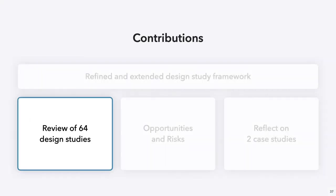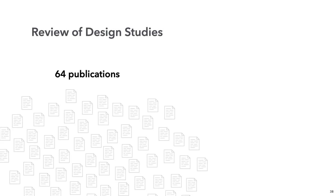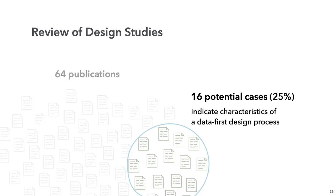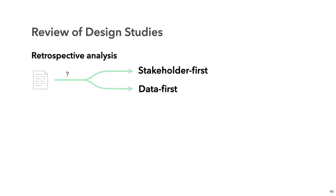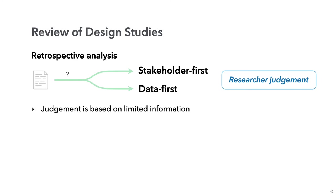We had our own direct experience with projects that started with specific datasets, but we were also interested if data-first approaches have been explicitly or implicitly described in the literature. In total, we reviewed 64 design study publications from the last two decades, and we identified 16 potential cases that indicate characteristics of a data-first design process. We searched for any statements suggesting that a design study began with data and doesn't exhibit a clear stakeholder-first ordering, for example in the motivation and process sections of a paper. An accurate allocation to a stakeholder-first or data-first ordering is not always possible in this type of retrospective analysis.